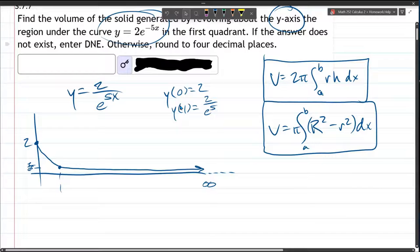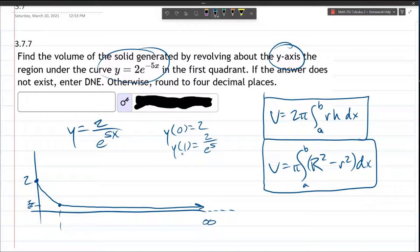We're rotating about the y-axis, so we're going to be drawing our rotation that way. Now, depending on how I do my cross-sections, that's going to determine which of these two formulas we're going to use.